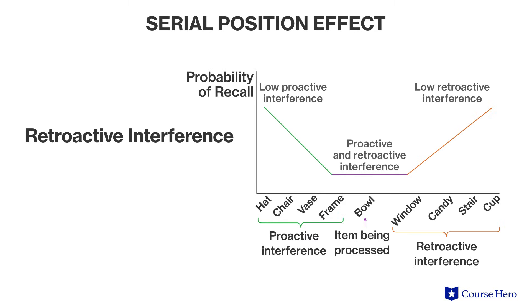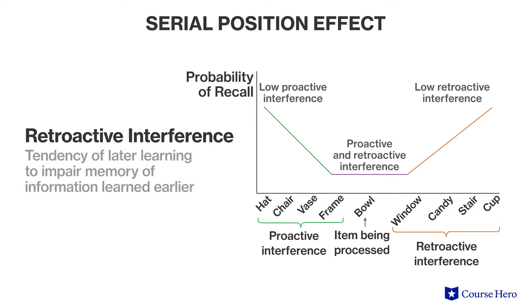In retroactive interference, there is a tendency of later learning to impair memory of information learned earlier. In other words, it's easier to recall words at the end of a given list because you heard them more recently.